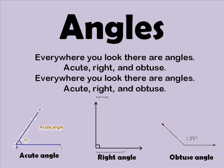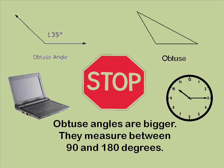Everywhere you look there are angles — acute, right, and obtuse. Obtuse angles are bigger. They measure between 90 and 180 degrees.